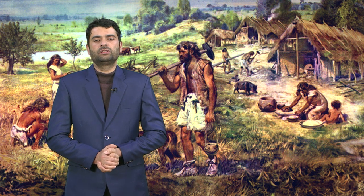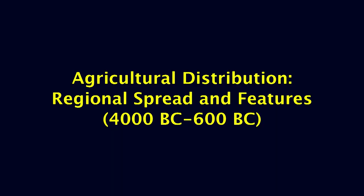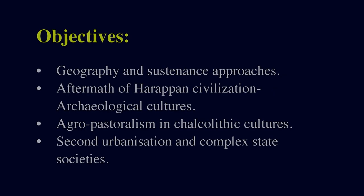Hello dear students. Today we will discuss the topic of agriculture distribution, regional spread, and features from 4,000 to 600 BC. The main focus will be on geography and sustenance approach, aftermath of Harappan civilization, archaeological cultures, agro-pastoralism and Chalcolithic cultures, second urbanization and complex state societies.